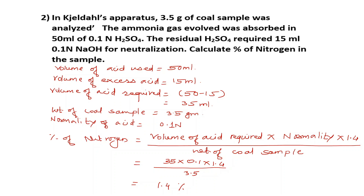By solving this numerical, it is easy to calculate the percentage of nitrogen present in a provided coal sample. So by using Zelda's method and these numericals, we can easily calculate the percentage of nitrogen present in a coal sample.